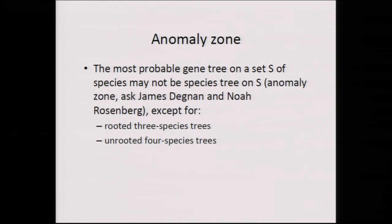You can't just take the most frequently observed gene tree — that would be the most probable gene tree, and that doesn't work. You might observe one gene tree appearing 50% of the time and think that's the species tree, but the most probable gene tree may not be the true species tree. There are exceptions: rooted three-species trees and unrooted four-species trees. The case where the most probable gene tree is not the species tree is called the anomaly zone — Noah Rosenberg, in the back row, came up with most of the theory here.